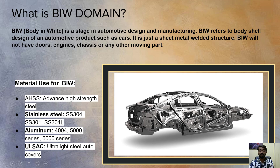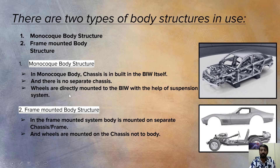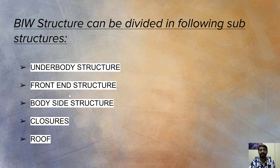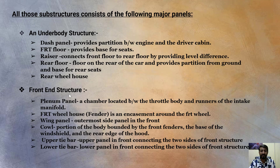There are various materials used in BIW. There are two types of BIW body structures: monocoque body structure and frame body structure. BIW can be divided into the following substructures: underbody, front, body side, closures, and roof. There are more detailed slides available for reference on the various BIW parts.